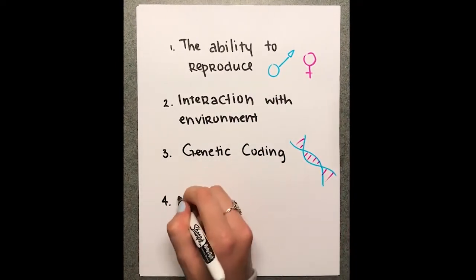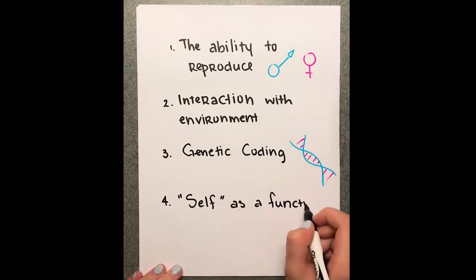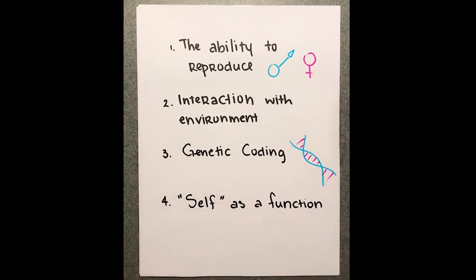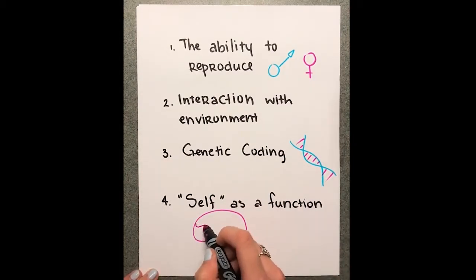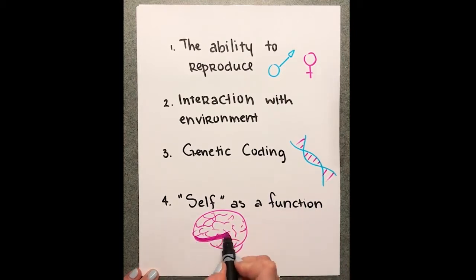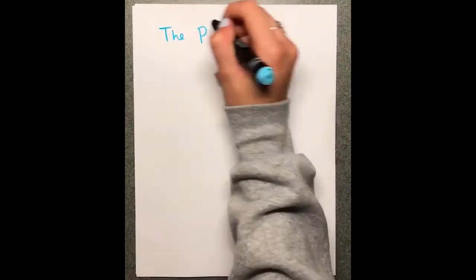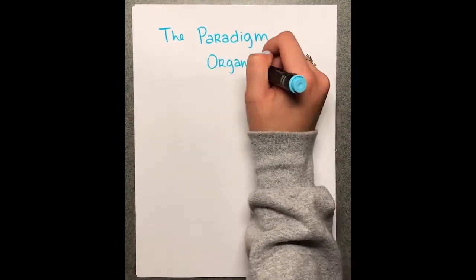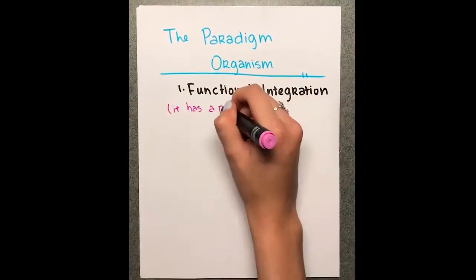The word that I want to use there is 'self.' I think that's the critical feature — however we want to define self, that there's some sort of functional continuity of all the parts, would be one way to put it.